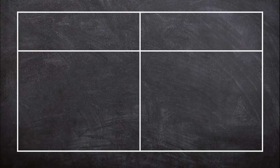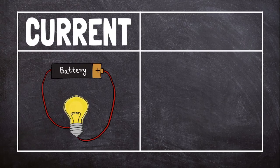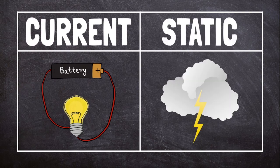There are two different types of electricity: current electricity and static electricity.